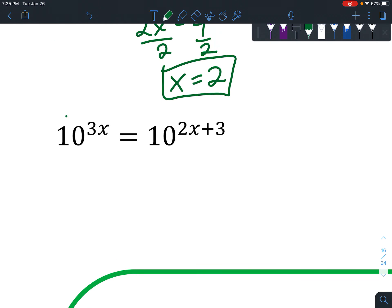Alright, so this one, once again same base, check. And then this has to equal this. We've got 3X = 2X + 3. When you have variables on both sides, you have to subtract one of those clusters to get it over to the other side.